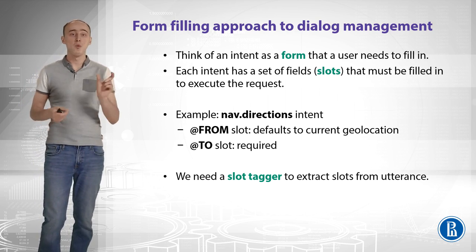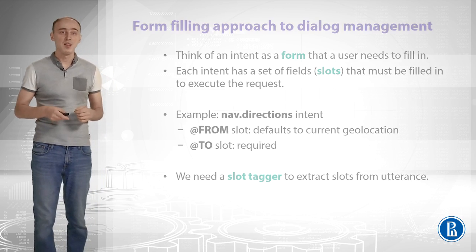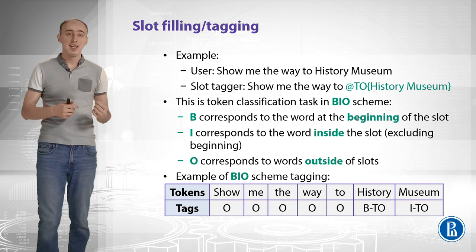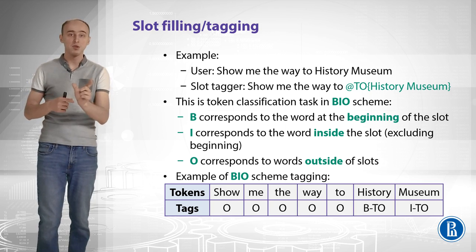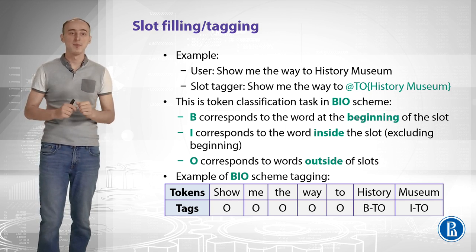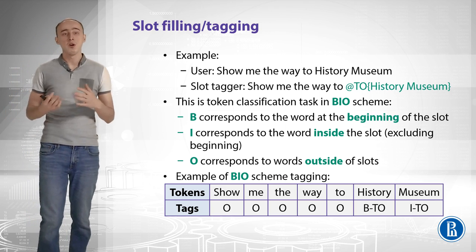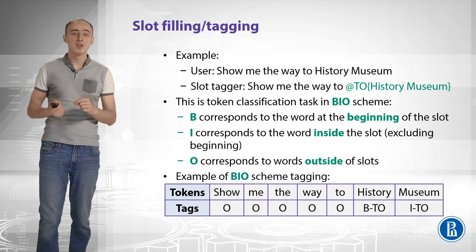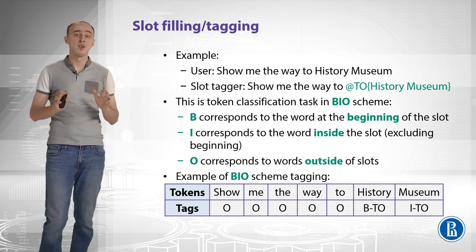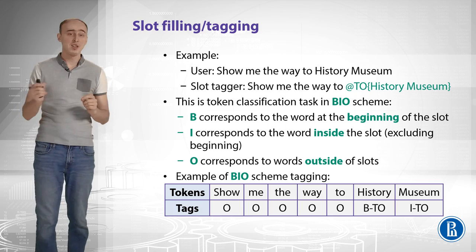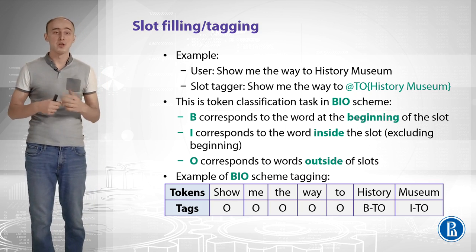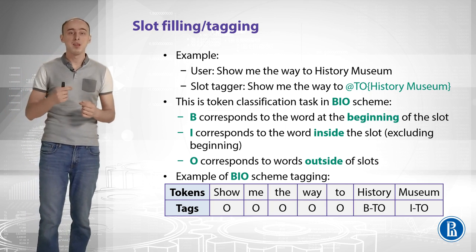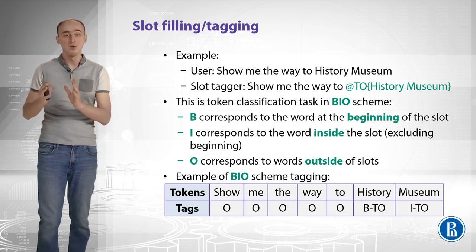Let's look at a slot filling example. The user says: 'Show me the way to history museum.' We expect our slot tagger to highlight 'history museum' and tell us it is the value of the 'to' slot in our form. You should think of it as a sequence tagging task, solved using BIO-scheme encoding. B corresponds to the word at the beginning of the slot, I corresponds to a word inside the slot, and O corresponds to all other words outside of slots. For 'show me the way to history museum,' the tags are: 'show me the way to' → O, 'history' → B-to, 'museum' → I-to.